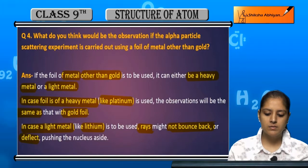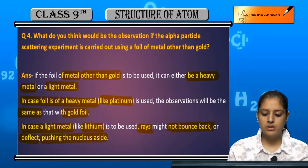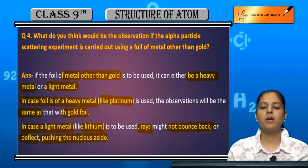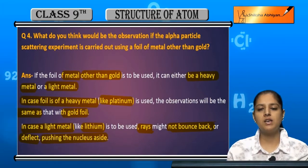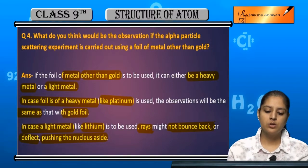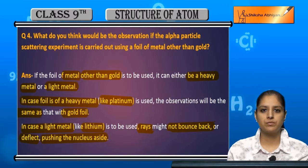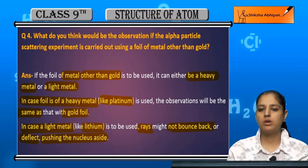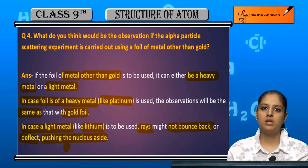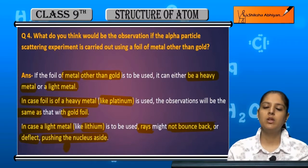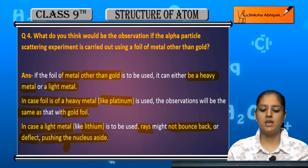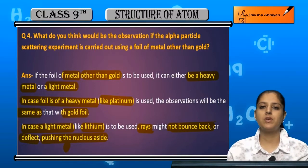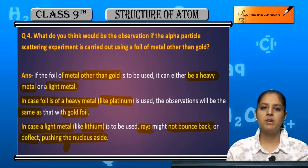If we take a light metal, for example lithium, the rays don't bounce back and the deflections don't affect the nucleus in the same way. A light metal will not cause the alpha particles to bounce back, so the deflections and bouncing-back observations will differ if we use a light metal instead of gold.